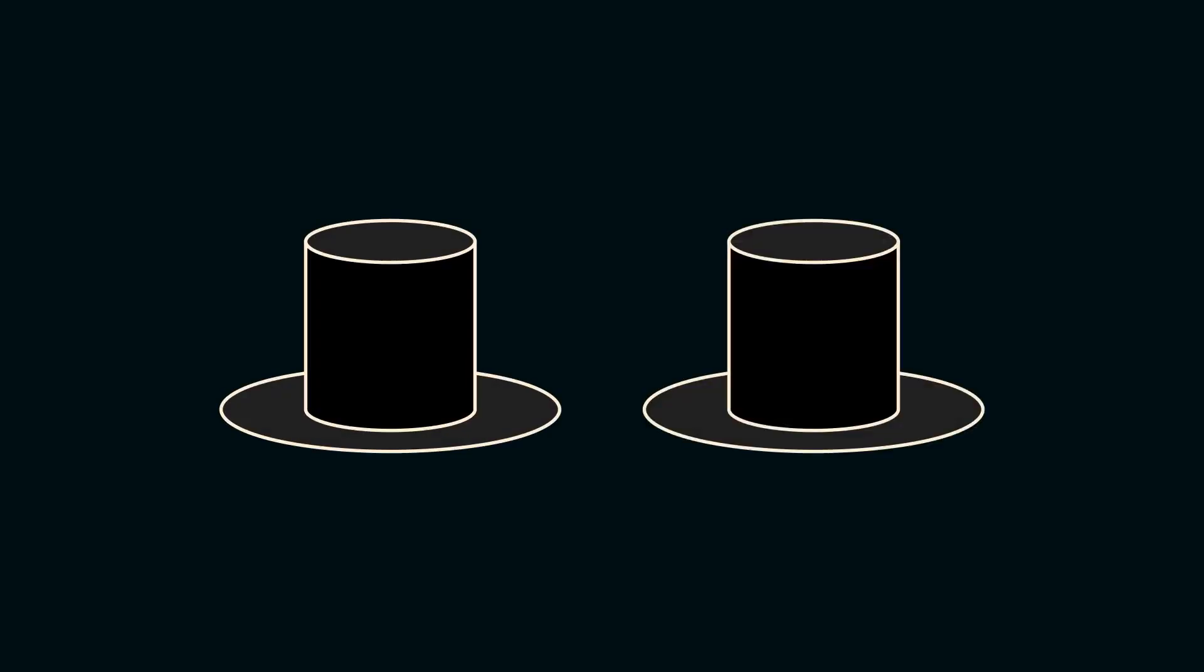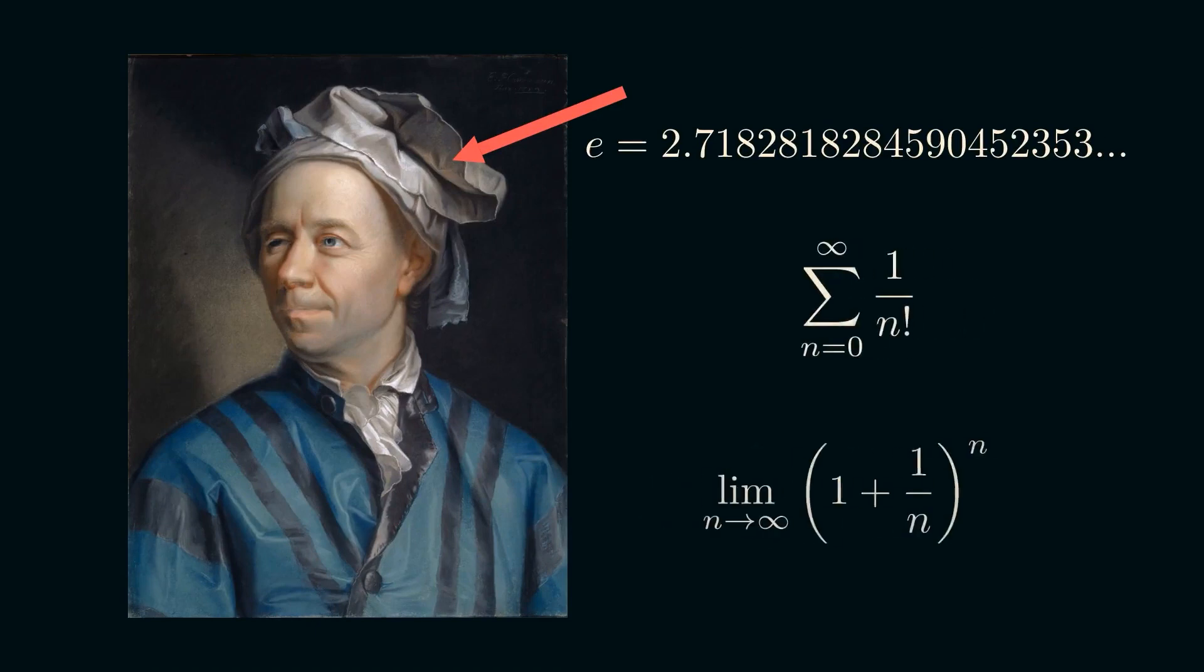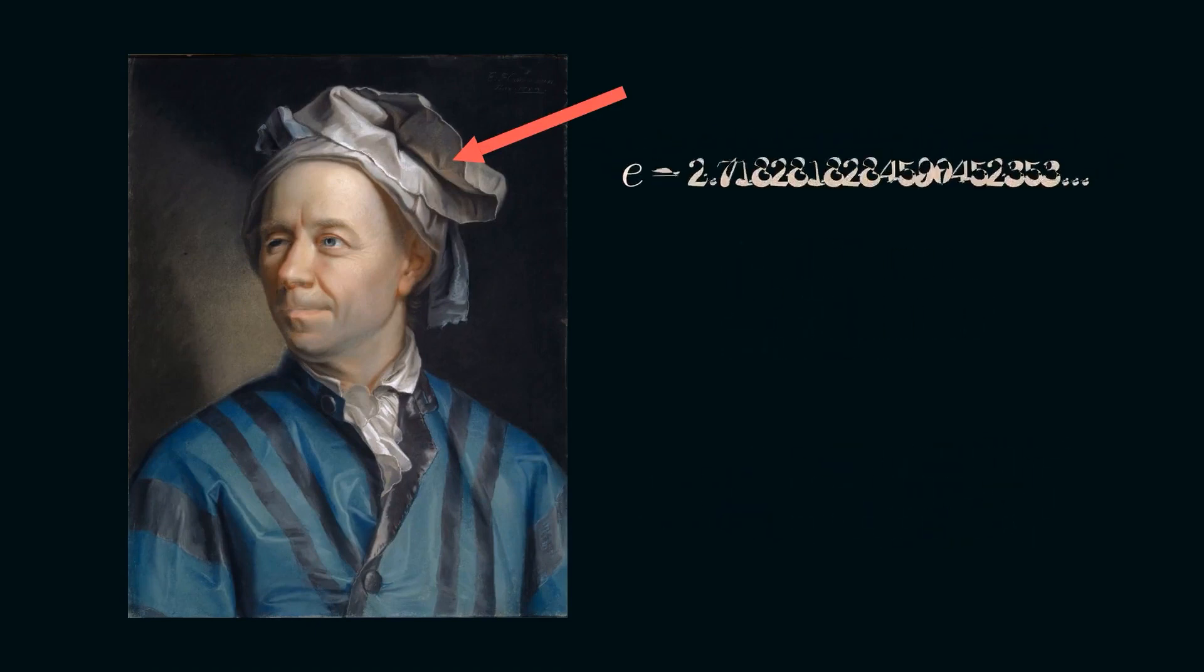This is a hat. These are two hats. And this is Euler's hat. This is Euler's number. But so are these. Now, this Euler's number has a hat on them, and his name is Todd.